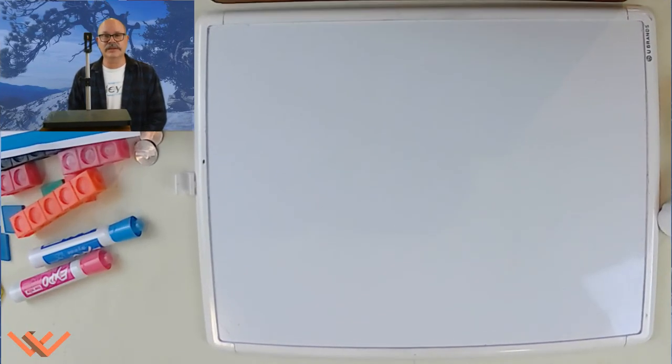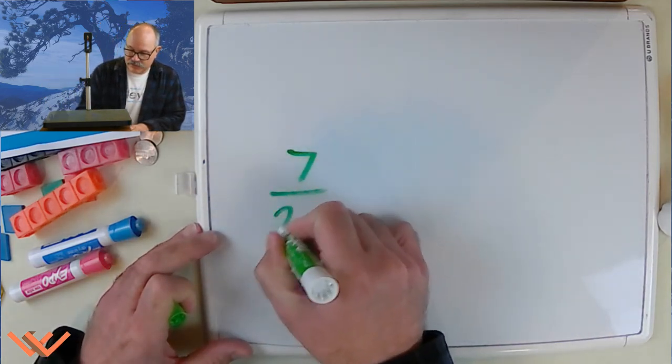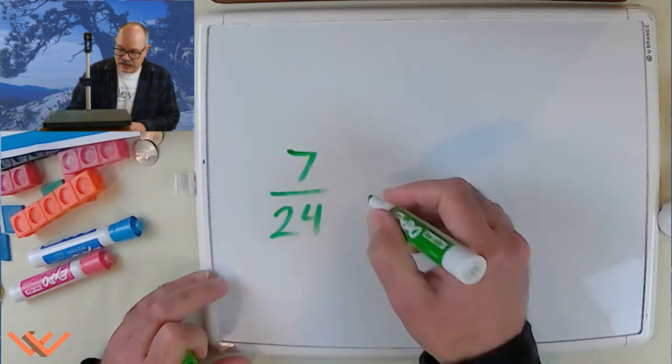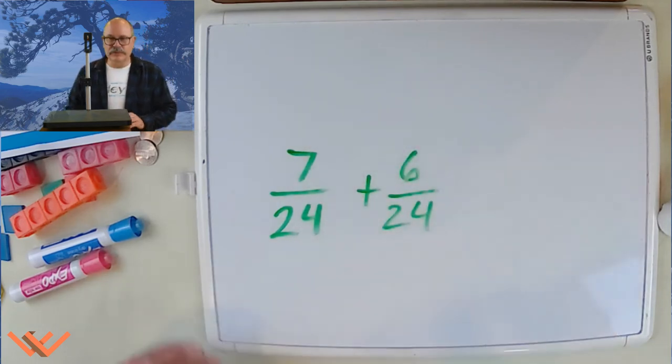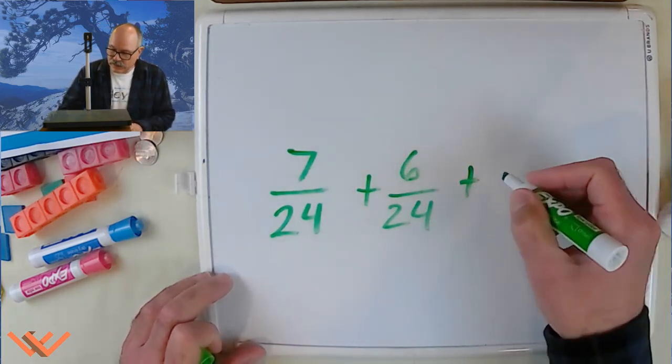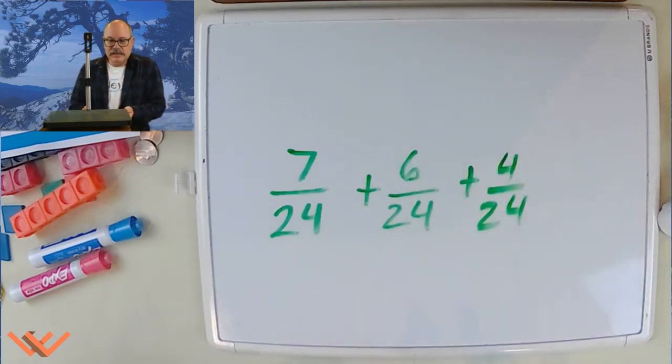Let's take a look at a couple others here. But this time, I'm going to make it a little more interesting. Let's say I have 24 pieces of stuff. And I gave 7 of that 24 to my daughter. And I gave 6 of that 24 to her boyfriend. Then I gave 4 of that 24 to my son.